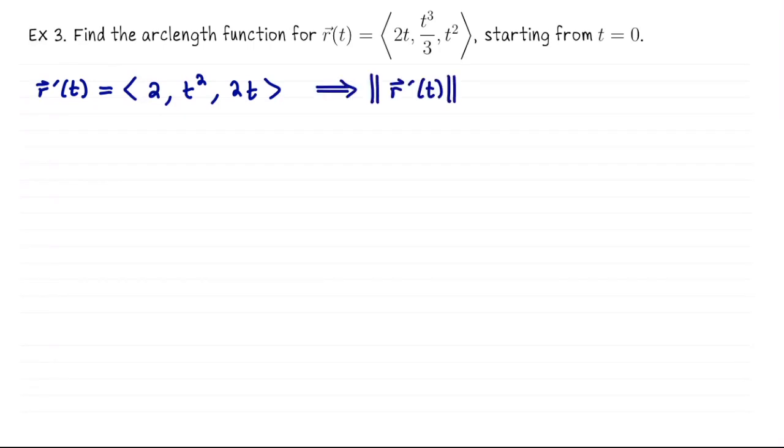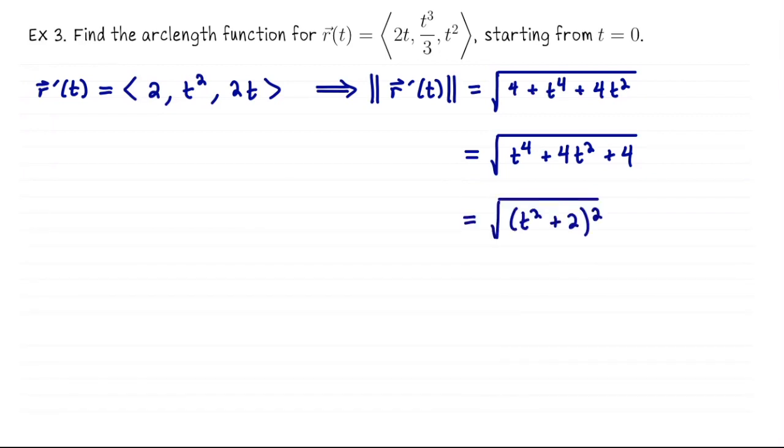Now we can compute the speed. So the length of this velocity vector is going to be the square root of 4 plus t to the fourth plus 4t squared. We can actually simplify this. Let me order it in standard order, so in decreasing powers of t. So that's the square root of t to the fourth plus 4t squared plus 4. And then that actually factors perfectly. That's the square root of the quantity t squared plus 2 squared. So we get that the speed simplifies to t squared plus 2.